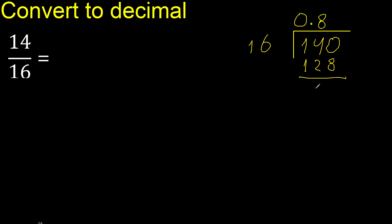Subtract — the result is 12. There is no number that goes down, therefore complete — always complete with 0. Point is here, point only once. Bring down: 120.